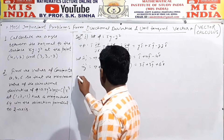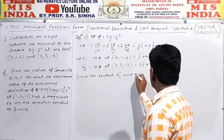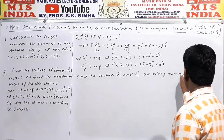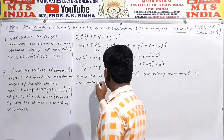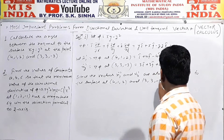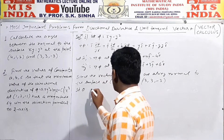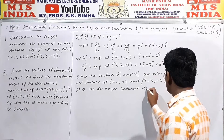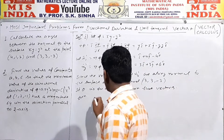Since the vectors n₁ and n₂ are normal to the surface at points (4,1,2) and (3,3,-3) respectively, if θ is the angle between these vectors n₁ and n₂, then cos θ is equal to their dot product divided by the product of their magnitudes.